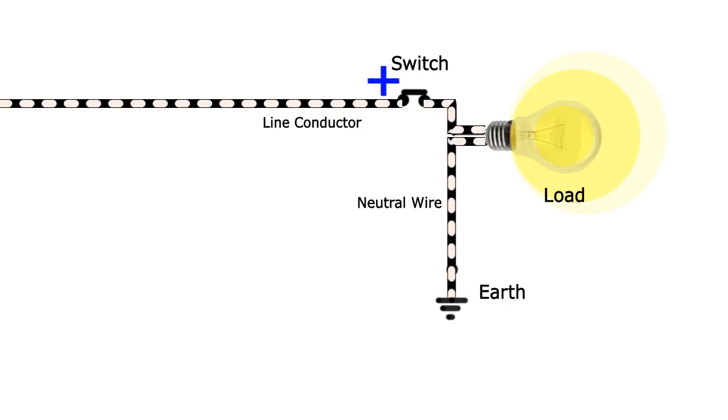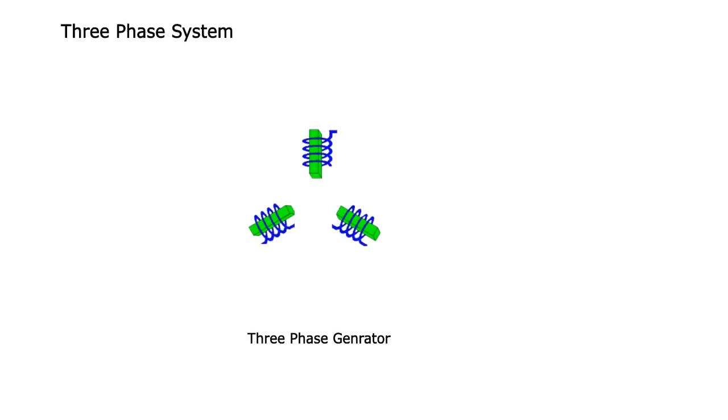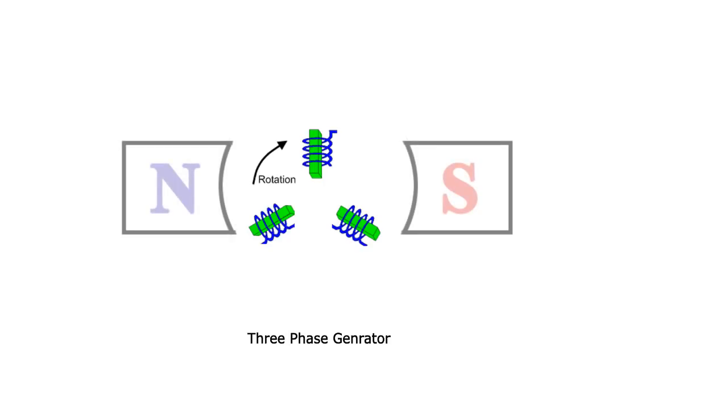This is the case of single-phase system which is obsolete nowadays due to low power generation capability in comparison to three-phase system which generates three times the power than single-phase system. In three-phase system, three similar coils displaced 120 degrees from each other rotate in a magnetic field. Hence the voltage generated in each phase is displaced in time with the other.